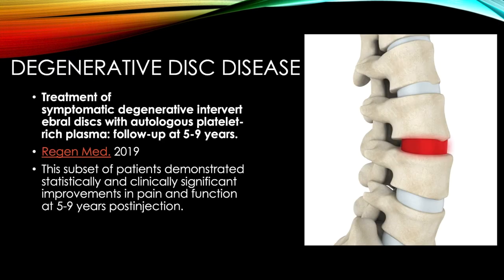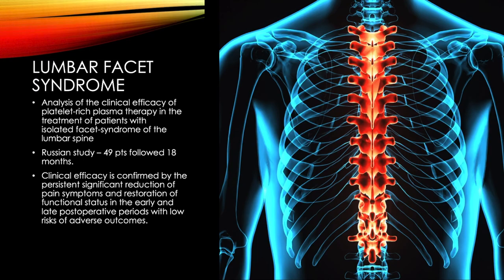For the spine, a 2019 study showed that a subset of patients demonstrated clinically significant improvements in pain and function from five to nine years post-injection of PRP into the disc — remarkable long-term follow-up. For facet arthritis, a study of almost 50 patients over a year and a half found a persistent, significant reduction of pain symptoms and increase in function in both early and late post-procedure periods, with low risks of complications.